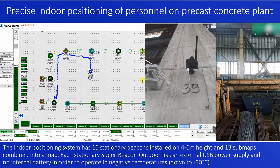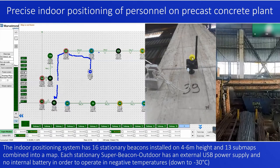It could also be a Windows delay, since it was running on a Windows machine. Look at how the station beacons were placed — there was electricity charging since the plant works in negative temperatures and customers asked to remove the batteries. So this is a typical super beacon but without a battery, and it's a super beacon outdoor, protected against dust and moisture. Since there's no battery, it must always be USB powered.